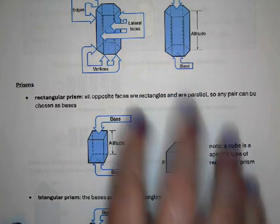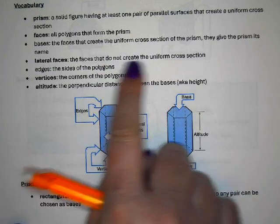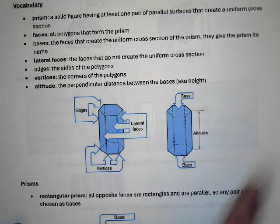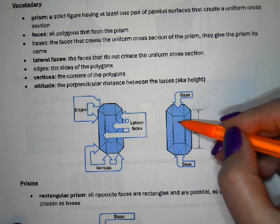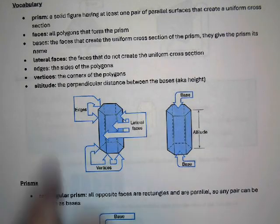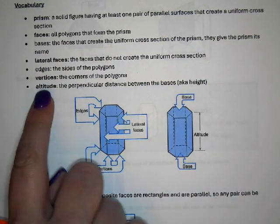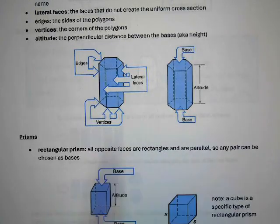Other types of prisms are named based on the shape of the base. The lateral faces — lateral means side — are the faces that do not create the uniform cross-section. Edges are the sides of the polygon, like where the edges of the rectangle come together. Vertices are the corners. The altitude is the perpendicular distance between the bases, which we think of as height.